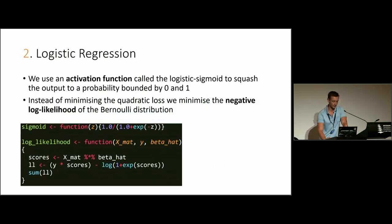Now imagine we have a logistic regression. You want to predict the probability of something. Here we obviously have an activation function, which previously was one, a linear function. The logistic sigmoid, we squash our output between zero and one. Instead of minimizing the quadratic loss, we minimize the negative log likelihood of the Bernoulli distribution. This is how I coded it up to get my sigmoid function and log likelihood function in R.